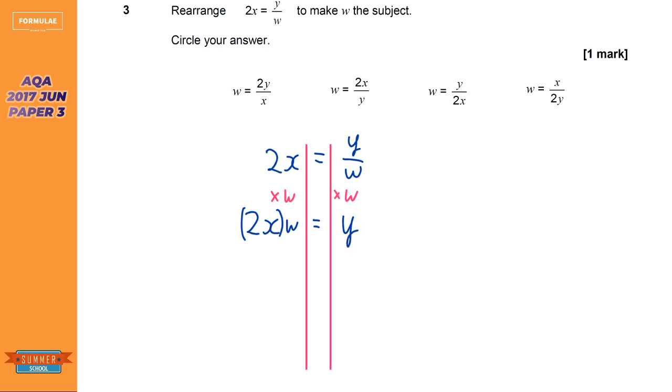Next we want to get rid of that 2X. So what we're going to do is divide by 2X to get rid of that 2X. So we've got W equals and then divide just means over. So it's Y over 2X. So the correct answer is that one there.